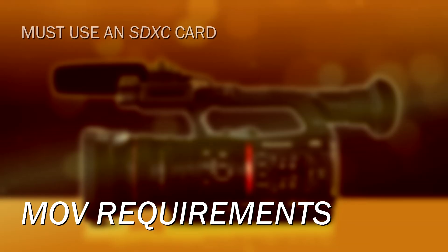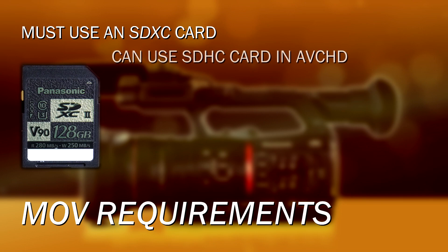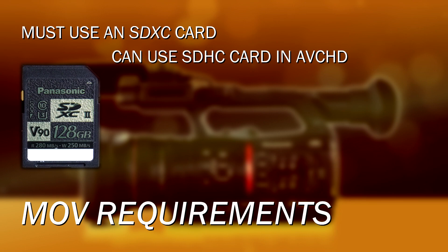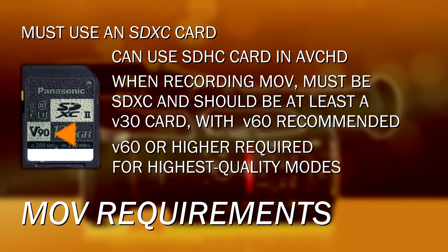A restriction is that you've got to use an SDXC card when you're recording in the MOV format. If you're in AVCHD, you can use whatever kind of card you want — SDHC, SDXC, whatever. But when you're recording MOVs, it's got to be an SDXC. And it really should be at least a V30 card. The best card you can use is a V60. You have to use a V60 for the highest bit rate modes, like the all-intra 400 megabit, which requires a V60 card. Most things can be done on a V30 card, but some do require the V60.